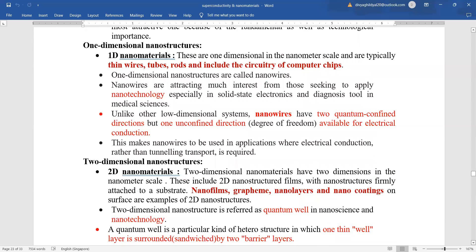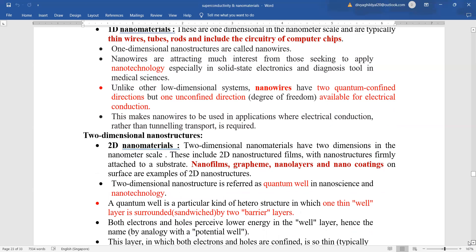One-dimensional: these are one-dimensional in nanometer scale and are typically thin wires, tubes, rods, and include the circuitry of computer chips. One-dimensional nanostructures are called nanowires. Nanowires are attracting great interest these days in solid state physics. Unlike other low-dimensional systems, nanowires have two quantum confined directions, one unconfined direction, degree of freedom available for electrical conduction. This makes nanowires to be used in applications more of electrical conduction.